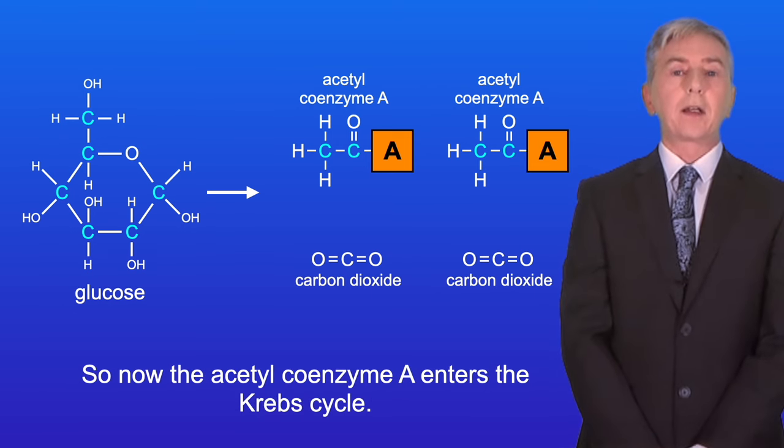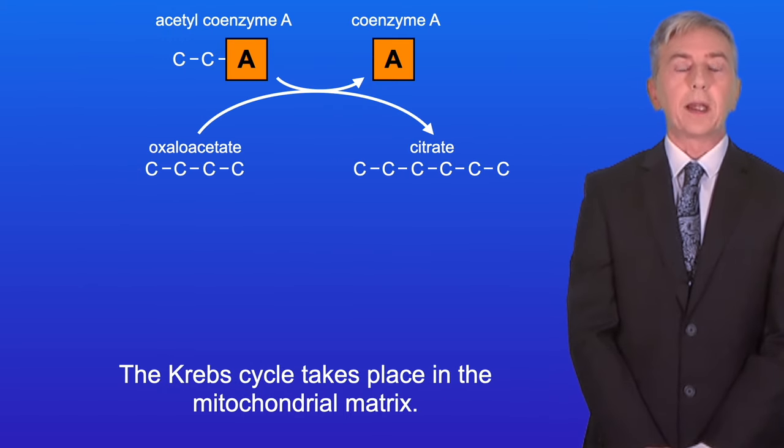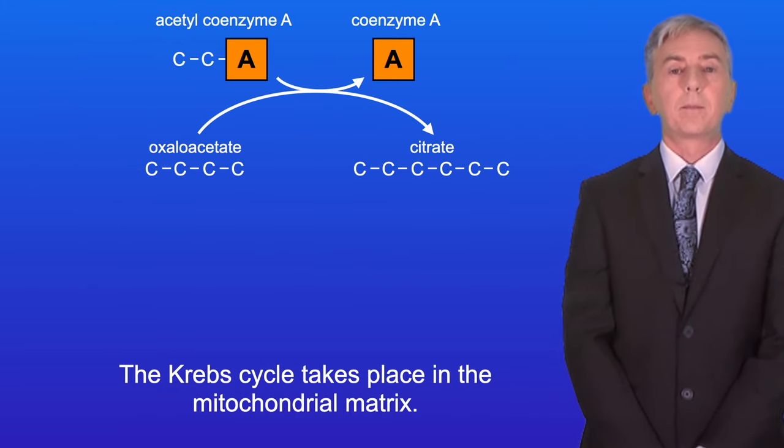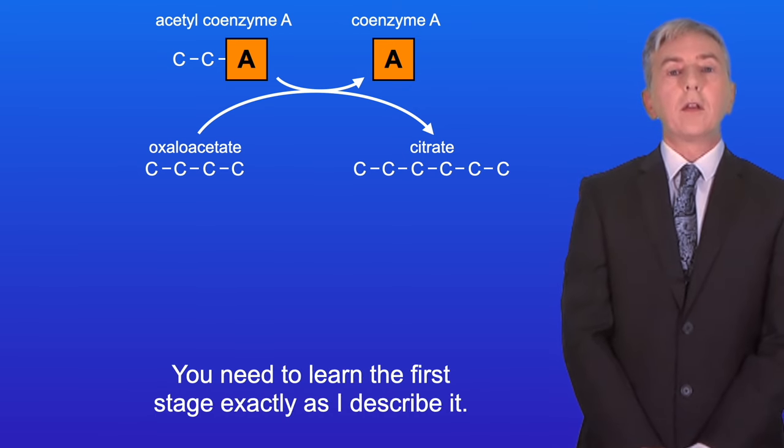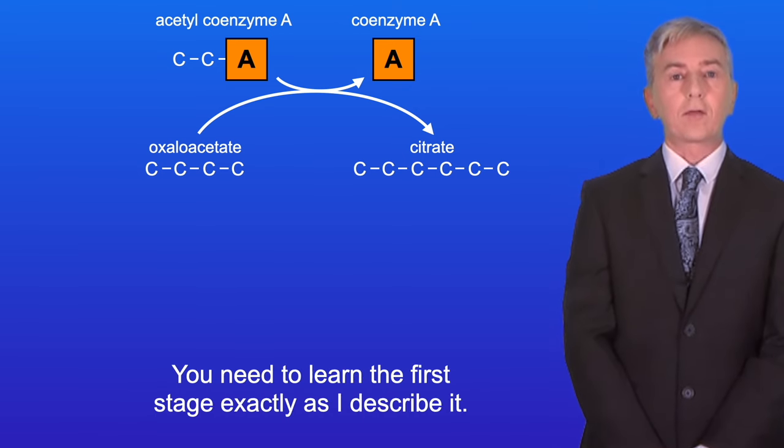So now the acetyl coenzyme A enters the Krebs cycle. The Krebs cycle takes place in the mitochondrial matrix. Now we can divide the Krebs cycle into two main stages. You need to learn the first stage exactly as I describe it.